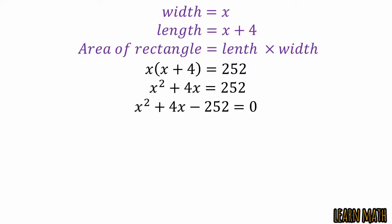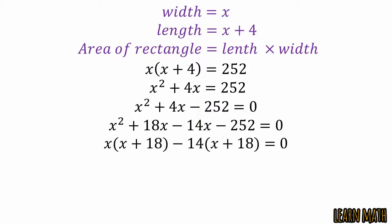We can solve this quadratic equation by factorization or by quadratic formula. Let's try factorization. We will simplify and we will get these factors (x + 18)(x - 14) = 0. x = -18 or x = 14. Cancel the negative and take the width x = 14.